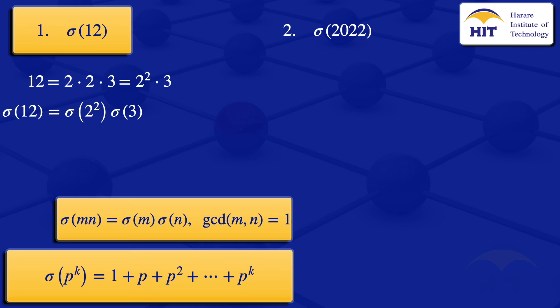We now evaluate sigma(2²). Using the formula, our p is 2 and our k is 2, so we go up to p squared: sigma(2²) = 1 + 2 + 2² = 1 + 2 + 4, which gives us 7.